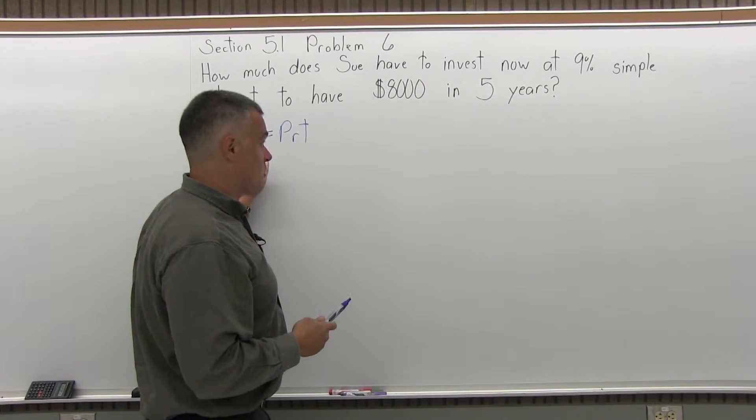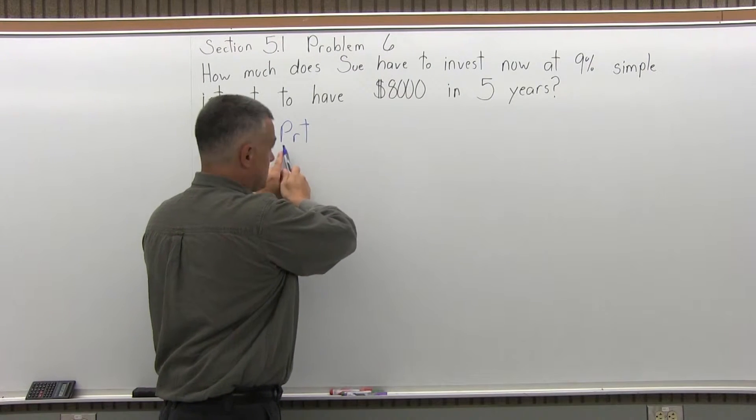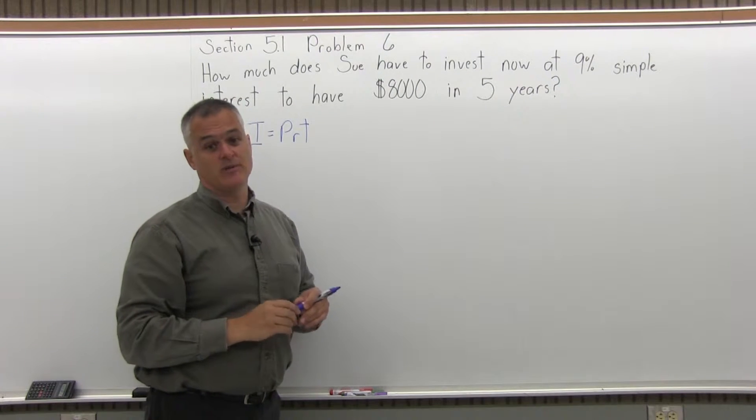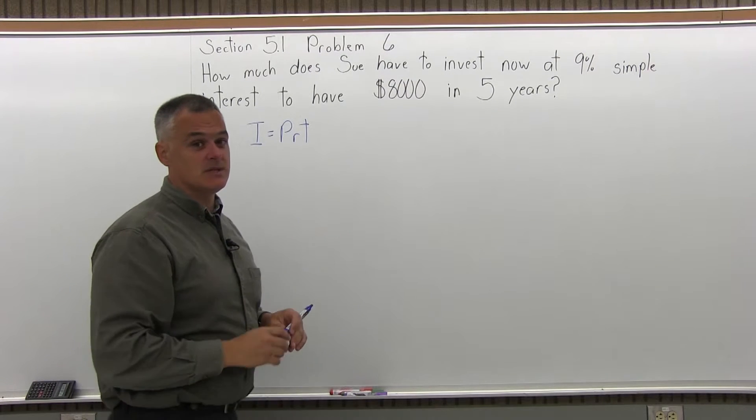Like if the interest was $1,000, then the principle must be $7,000. Or if the principle was $7,000, well that's the answer right there. What do you have to put in now? So that's not going to work. I have two unknowns, that's bad.